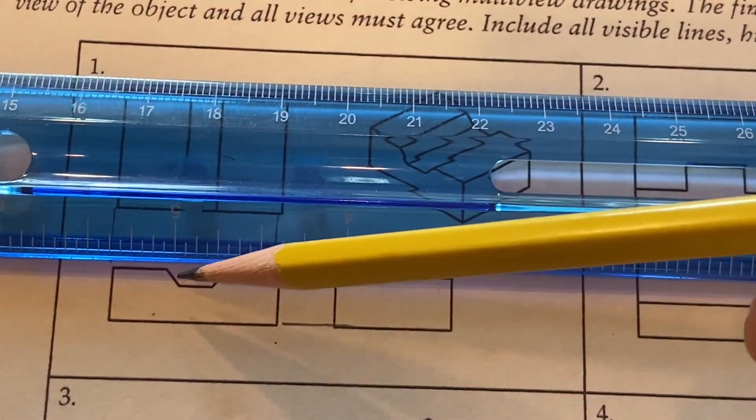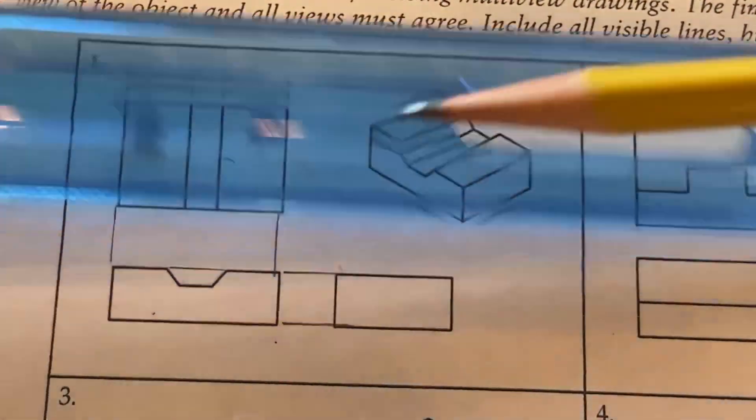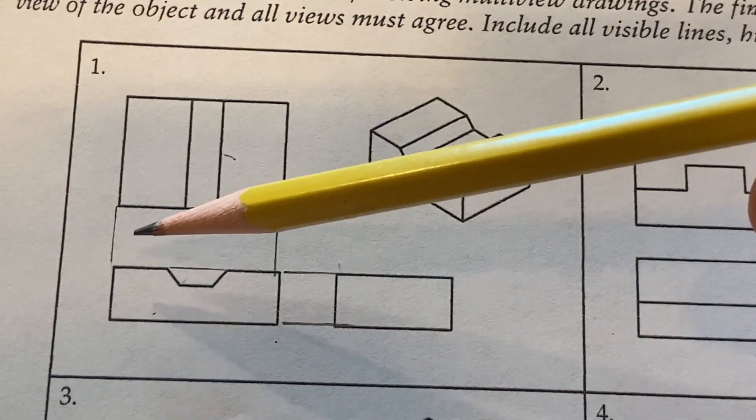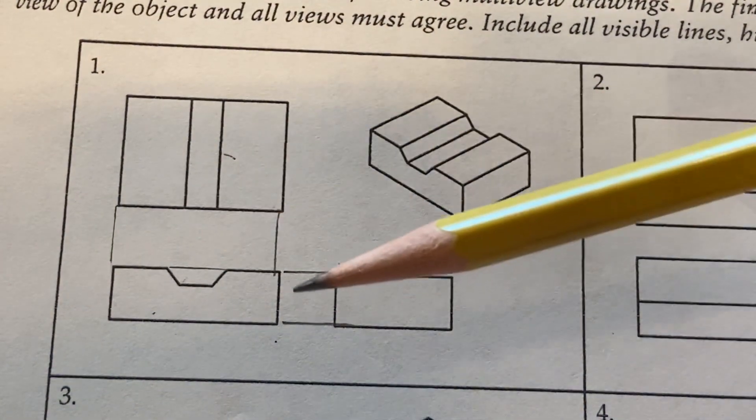Now, I'm doing these kind of dark right now just so you can see them. But in reality, these would be very, very light, faint construction lines.